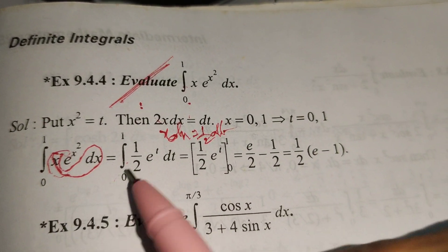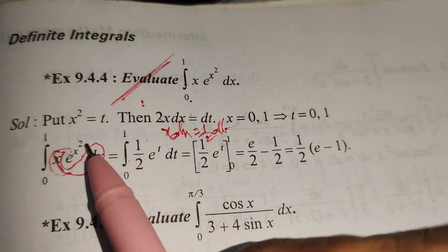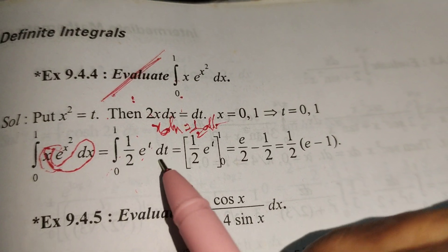Here x dx becomes ½ dt, and e^(x²) where x² = t becomes e^t dt.